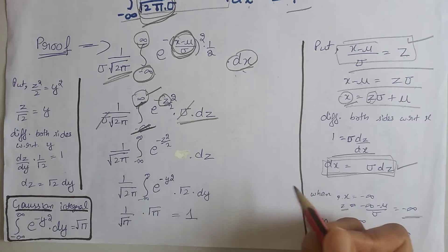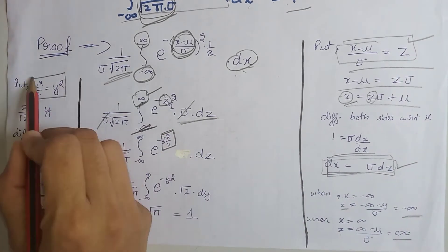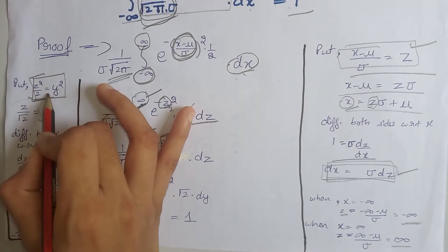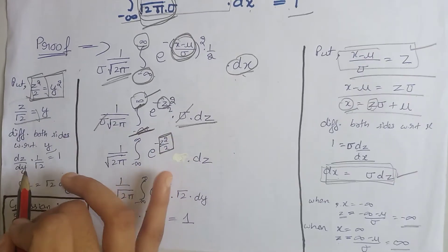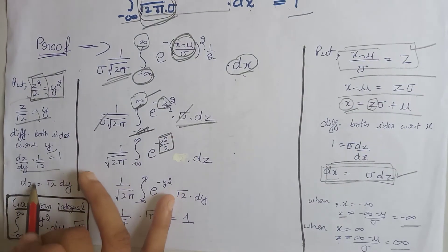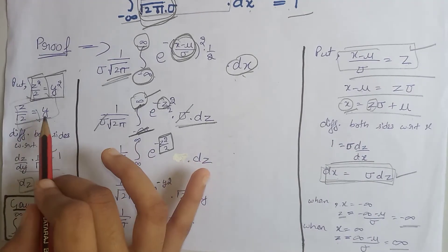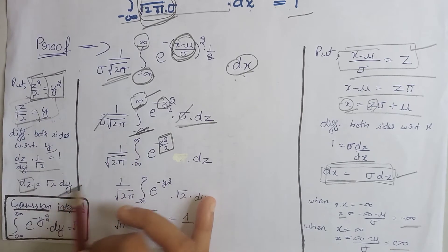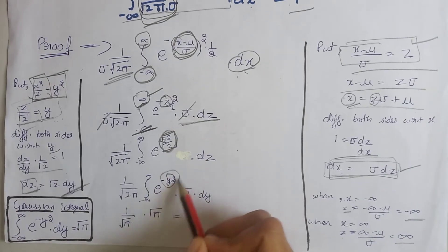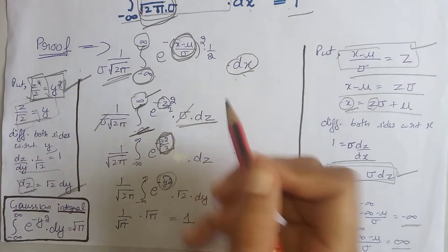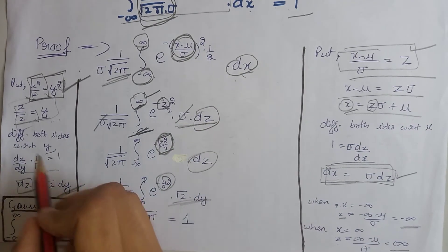Next, we will use another substitution: we put this term equal to y squared, then taking the square root of both sides we get this term. Differentiating both sides with respect to y, we get this value, and after that we get the value of dz in terms of dy. You can also differentiate with respect to z and you will get the same answer. So at this place we write y squared because of this equation, and at the place of dz we write square root of 2 dy because of this equation.